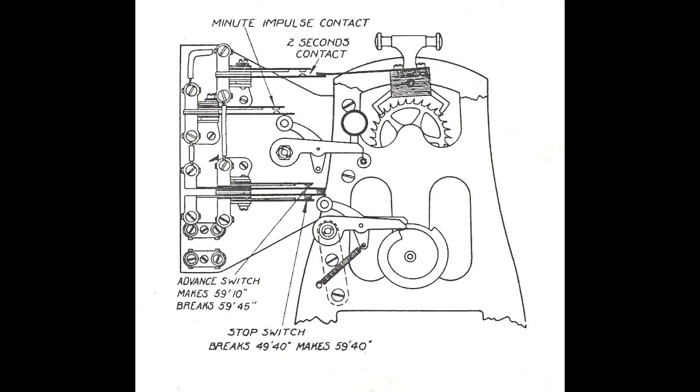The A line advance makes from 59.10 to 59.45. That means slow clocks will move forward a minute with each closure of the 2 second contact until they reach 59.